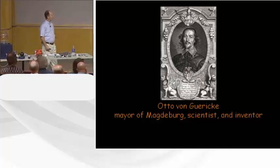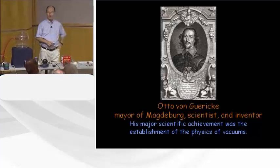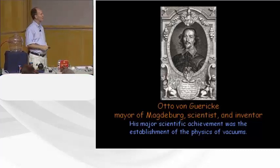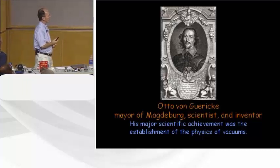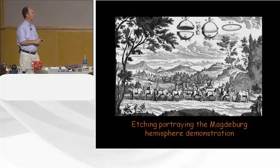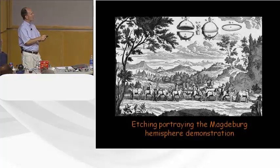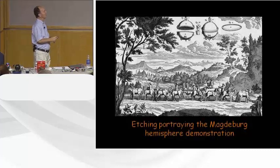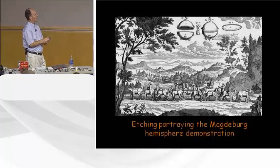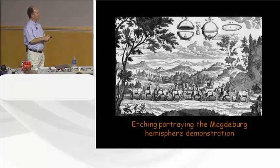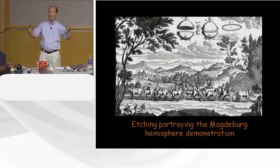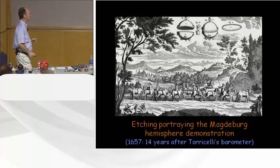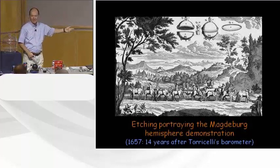Another figure from back a ways is Otto von Guericke, mayor of Magdeburg in Germany — back when politicians were also scientists and inventors. He invented the first vacuum pump, and his major scientific achievement was establishing the physics of a vacuum. He took two copper hemispheres with a leather seal, evacuated the chamber, and teams of eight horses pulling on either side could not pull the hemispheres apart — just due to the air pressure outside forcing the spheres together. This was done 14 years after Torricelli's barometer.